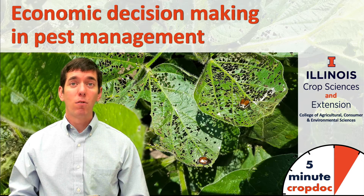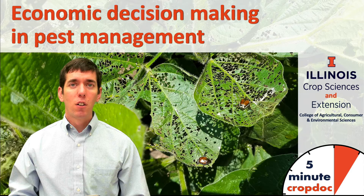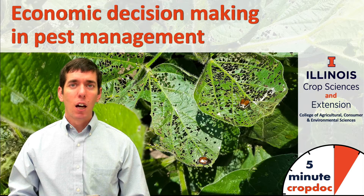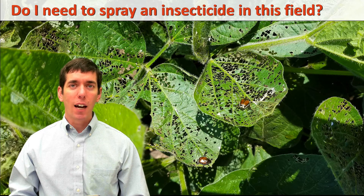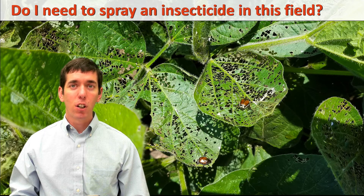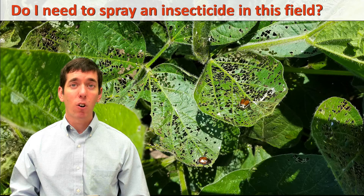Hi, I'm Nick Seider, field crop entomologist at the University of Illinois. Today we're going to be talking about economic decision making in pest management — specifically, how to determine whether or not you need to spray an insecticide in a field, based on input costs and the likelihood of suffering damage from a given pest population.